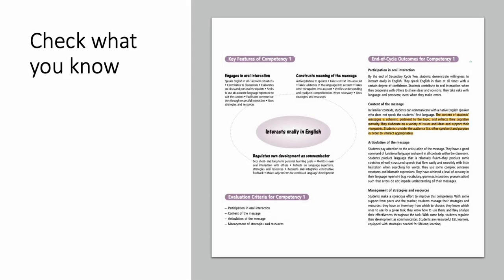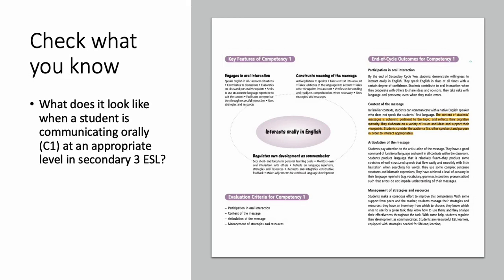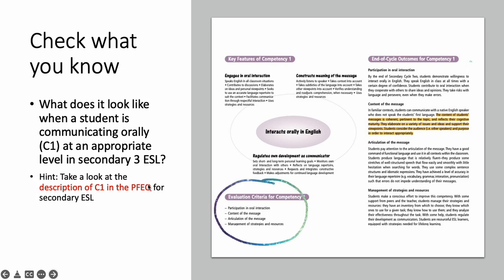Okay, so let's check what you know. We looked at grade one and two. What does it look like when a student's communicating orally using competency one at an appropriate level in secondary three ESL? So these are the fifteen year olds, right? We've gone way past the five, six, seven year olds into the fifteen year olds. So our first thing to do is open up the PFEQ and have a look at the evaluation criteria there. So these are the things we're looking for. Are they participating in oral interaction? What's the content of their message like? Their articulation of the message.